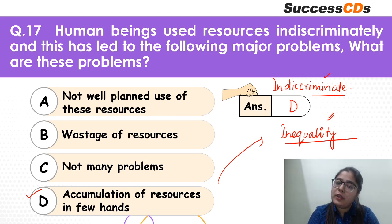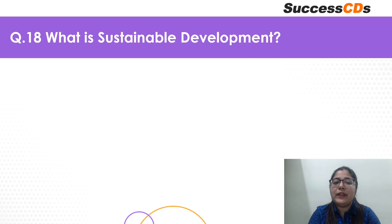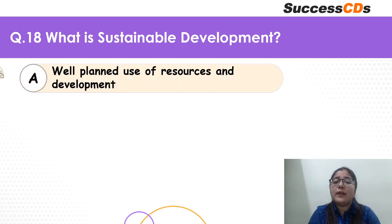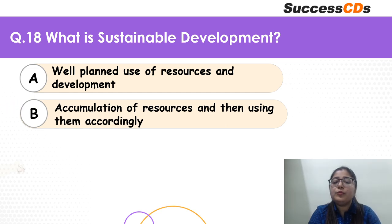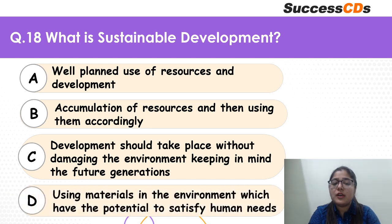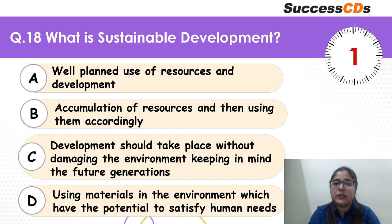There are many problems that arise from not using resources judiciously, but the most major problem is option D. Coming to question 18: what is sustainable development? This is a very important question that could be asked as a definition. Is it well-planned use of resources? Accumulation of resources? Development that takes place without damaging the environment and keeping in mind the needs of future generations? Or using materials in the environment that have potential to satisfy human needs?